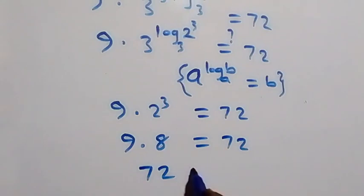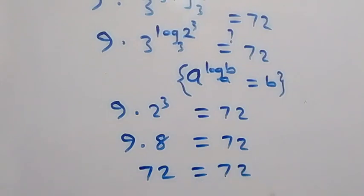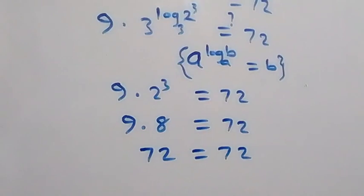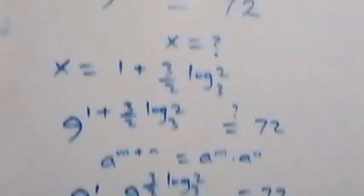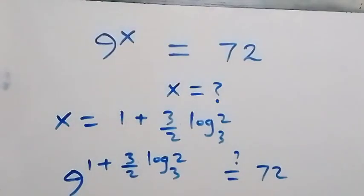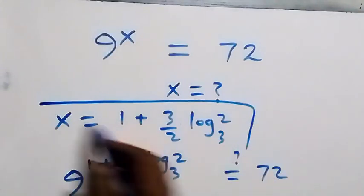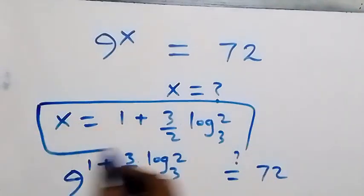9 times 8 is indeed 72, so the left hand side equals the right hand side. We conclude that x equals 1 plus (3/2) log 2 to base 3 satisfies this given problem.